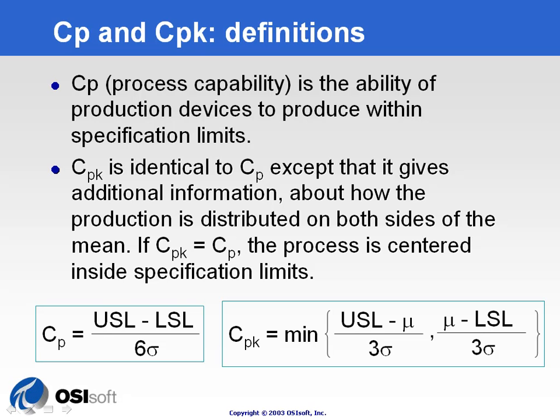As long as the variability in the quality of the product fits within the specification limits, we're safe and the product will be good quality and we can sell it. Specification limits most of the time come from the outside — from the customer — or we can set them up just to make sure that we're going to be able to sell to different types of customers.